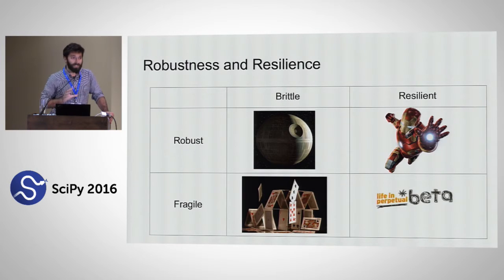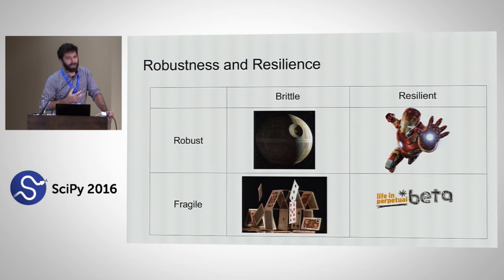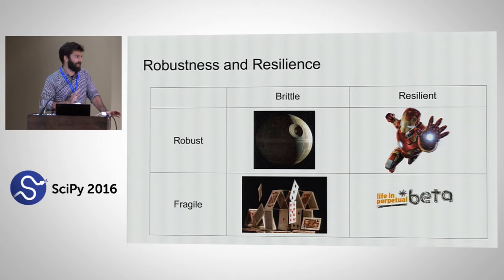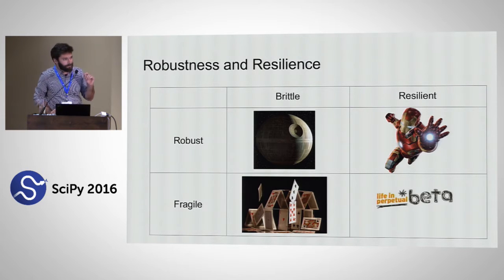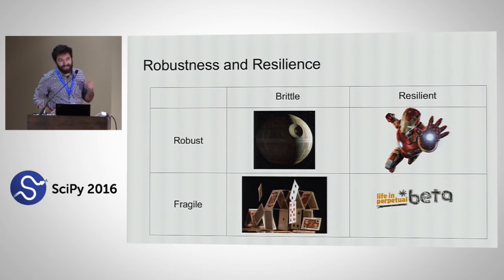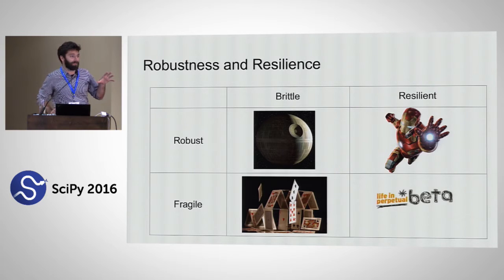As a conceptual matter, I want to talk about the difference between resilience and robustness in software. A good comparison is a house of cards versus the Death Star. A small vibration is enough to take down the house of cards, but the Death Star can take a beating. The problem with the Death Star, as you remember from Star Wars, is that it has a weak spot, and if you hit it just right the entire thing explodes. Compare that with Iron Man's suit — it can also take a beating, but when it takes damage all the nano robots start working and it starts repairing itself.